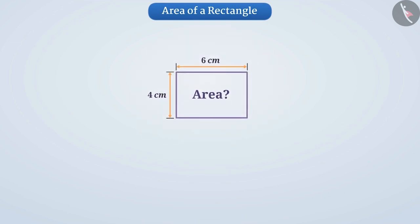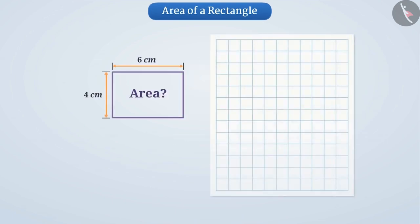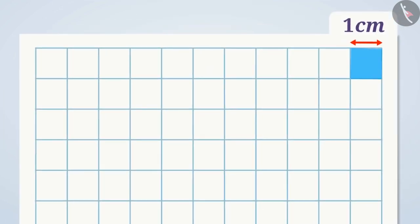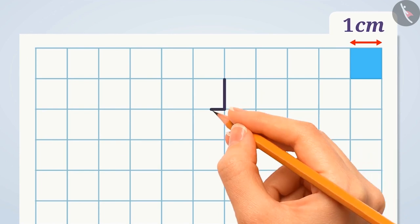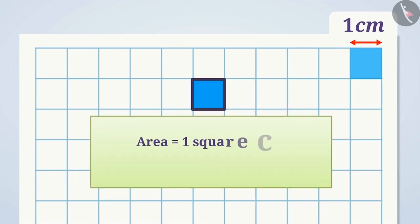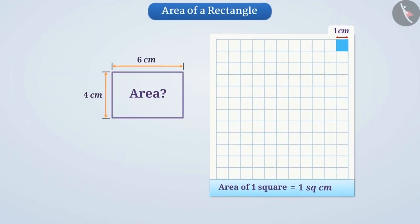To find the area, we will use a squared paper or graph paper, where every square measures 1 cm multiplied by 1 cm. Thus, the area of each square is 1 cm² or in short like this. Next, we will make an outline of the rectangle on this squared paper.